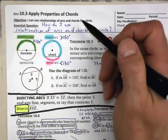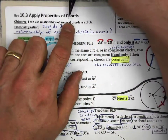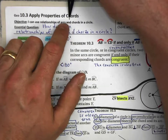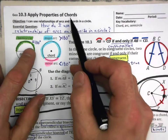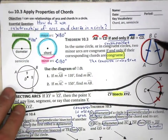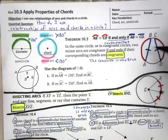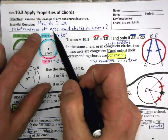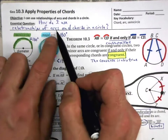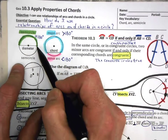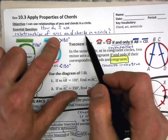Welcome to 10.3, Apply Properties of Chords. Remember that it does have an H there, but we pronounce it as if it is a cord that you use to charge your cell phone. A cord goes from circle to circle — this blue here is an example of a cord. Our central question is: how do I use relationships of arcs and cords in a circle? An arc is a part of a circle.